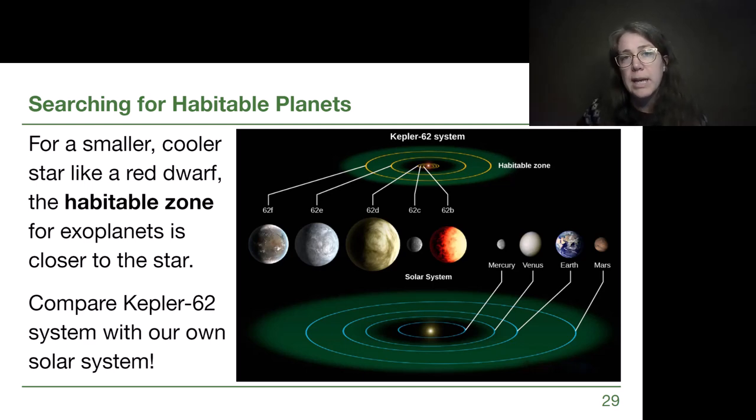If we were looking at planets around a smaller, cooler star, that whole habitable zone is physically closer to the star, and so it is something that shifts with the star properties, which is why we need to know about those star properties.